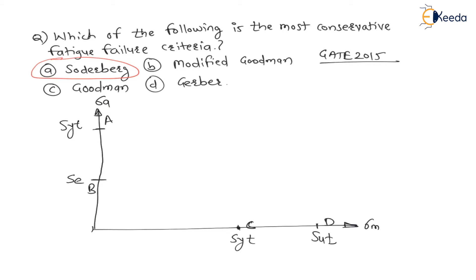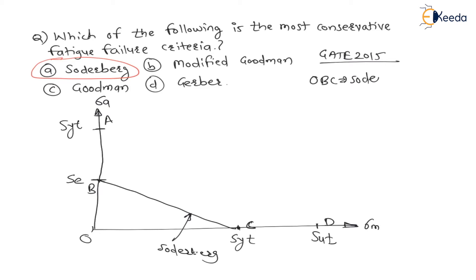If we join SE on the y-axis with SYT on the x-axis — that is, point B to point C — then it is the Soderbergh line. The region O, B, C is the Soderbergh safe region, meaning the area enclosed under this line is safe as per the Soderbergh criterion.